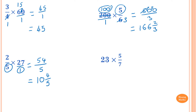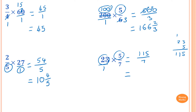23 times 5 over 7. So 23 is just like 23 over 1, and I cannot simplify. So I just do 23 times 5: 5 times 3 is 15, carry 1; 5 times 2 is 10, plus 1 is 11. So 115 over 7. Now I just write it as a mixed numeral. 7 goes into 115: 7 goes into 11 is 1, remainder 4; it becomes 45; 7 goes into 45 is 6 times (6 times 7 is 42), remainder 3. So 3 over 7. The answer is 16 and 3 over 7. Thank you so much for watching.